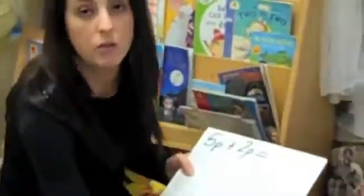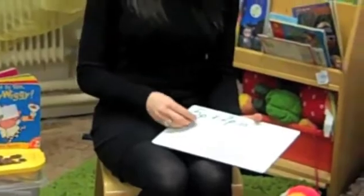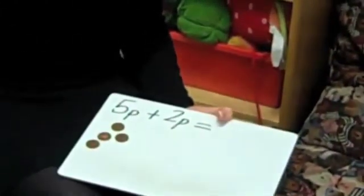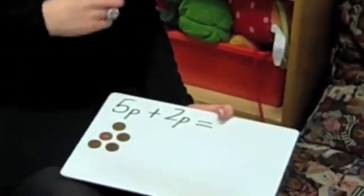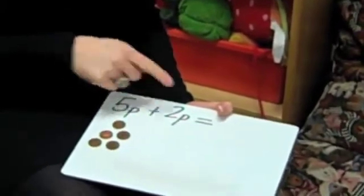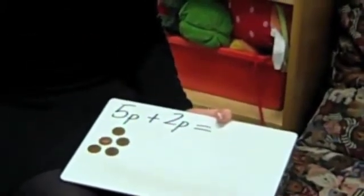I'm now going to use my 1p coins to add this together. So I'm going to get 5 1p coins because it says 5p. 1, 2, 3, 4, 5, so it's 5 1ps, plus 2p so I'm going to use 2 1ps.